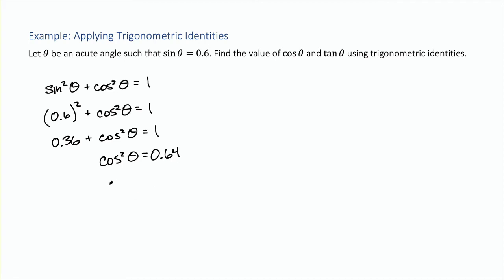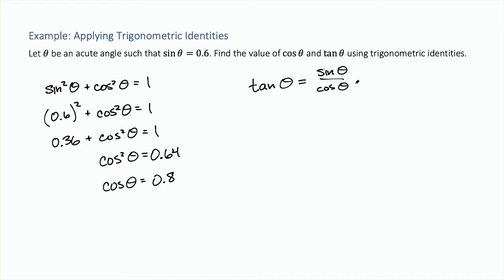Taking the square root gives cosine of theta equals 0.8. Now to find tangent of theta, using the quotient identity, tangent of theta equals sine of theta over cosine of theta. Sine of theta was given as 0.6 and cosine of theta is 0.8, so tangent of theta equals 0.6 over 0.8, which is 3/4 or 0.75.